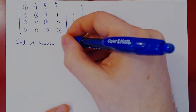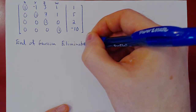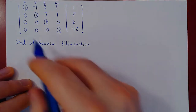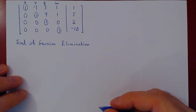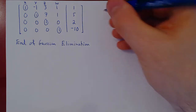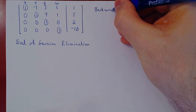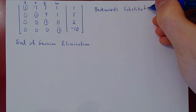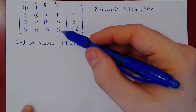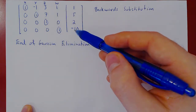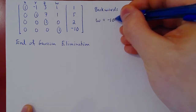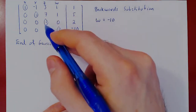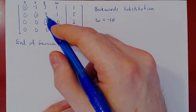Now since we have reached the bottom row, this is the end of Gaussian elimination. And as always, because every variable is leading and we have a unique solution, we now use back substitution. Starting from the bottom row, we can solve for w, which is really easy: w is simply equal to negative ten. Moving up one row, we can solve for z. There is no term for w, and so quite easily z equals two.